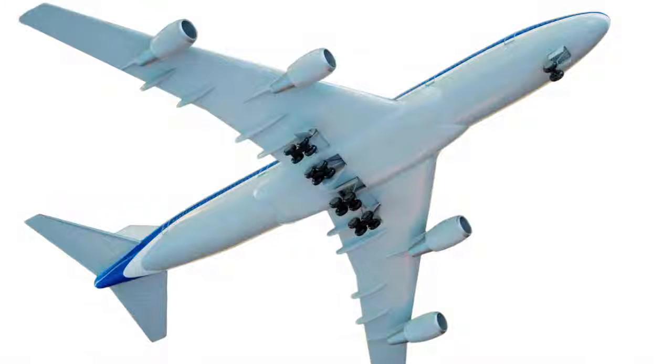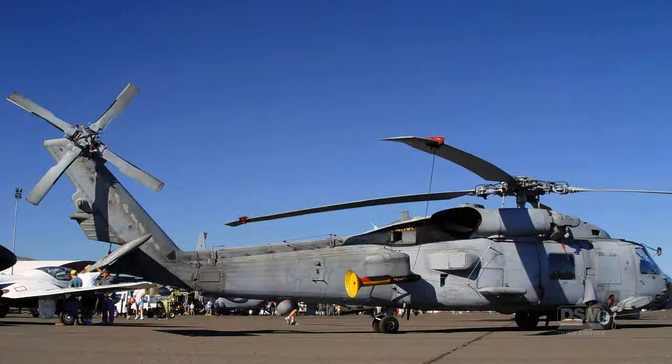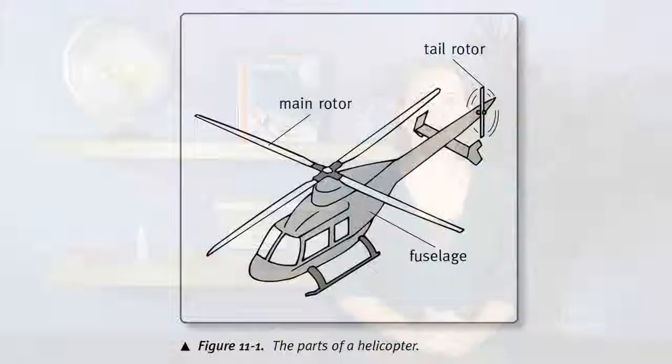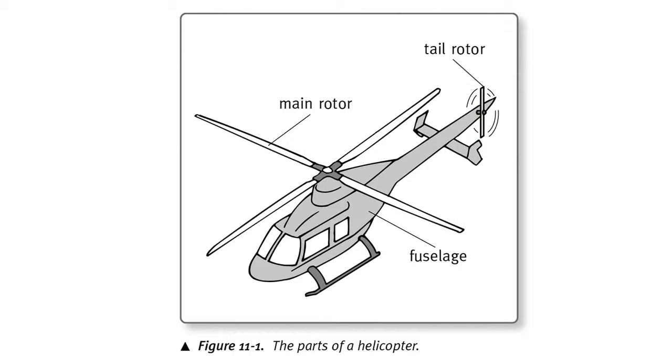If necessary, explain that an airplane has a long fuselage to which the wings and a tail assembly are attached. A helicopter has a shortened fuselage, no wings, and a small tail. Also, most helicopters have one very large propeller above the fuselage and a smaller one attached to the tail.